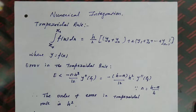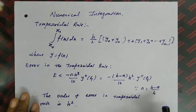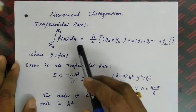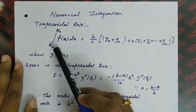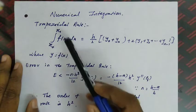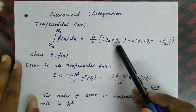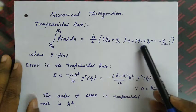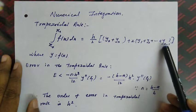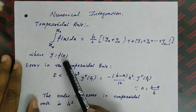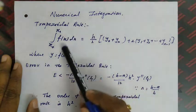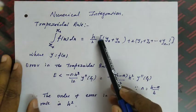Welcome to the lecture series on numerical methods. Today we are going to discuss numerical integration. Under this topic, the first rule is the trapezoidal rule. The rule is: integral from x₀ to xₙ of f(x)dx equals h/2 times [y₀ + yₙ + 2(y₁ + y₂ + ... + yₙ₋₁)], where y = f(x). This is the trapezoidal rule formula, which we are going to use for finding the integration value for given data.